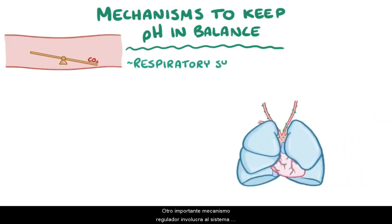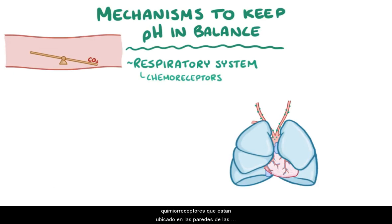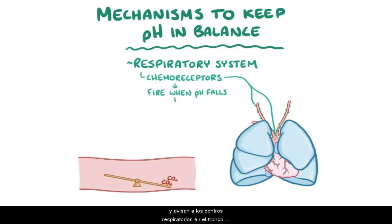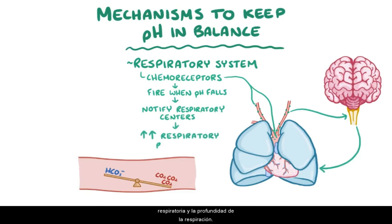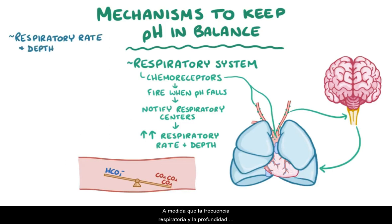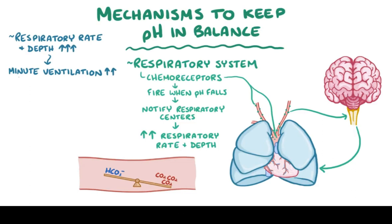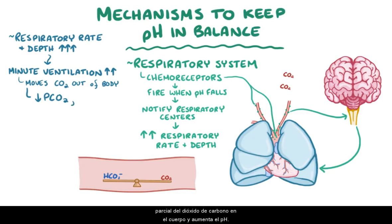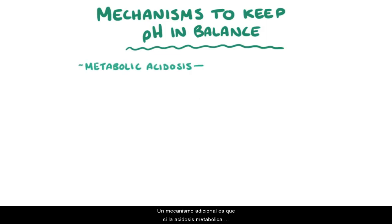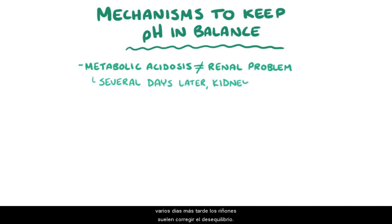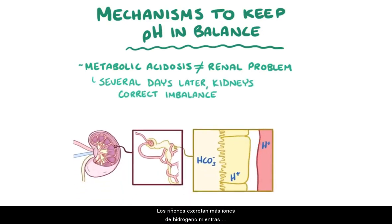Another important regulatory mechanism involves the respiratory system, and starts with chemoreceptors located in the walls of the carotid arteries and in the wall of the aortic arch. These chemoreceptors start to fire when the pH falls, and that notifies the respiratory centers in the brainstem to increase the respiratory rate and depth of breathing. As the respiratory rate and depth of each breath increases, the minute ventilation increases — the volume of air that moves in and out of the lungs in a minute. The increased ventilation helps more carbon dioxide move out of the body, which reduces the partial pressure of carbon dioxide and increases the pH. Additionally, if metabolic acidosis isn't caused by a renal problem, then several days later the kidneys usually correct the imbalance by excreting more hydrogen ions while reabsorbing bicarbonate ions, so that it's not lost in the urine.